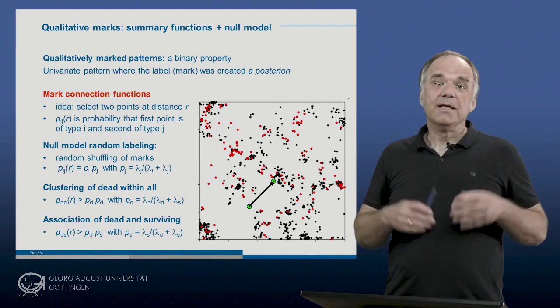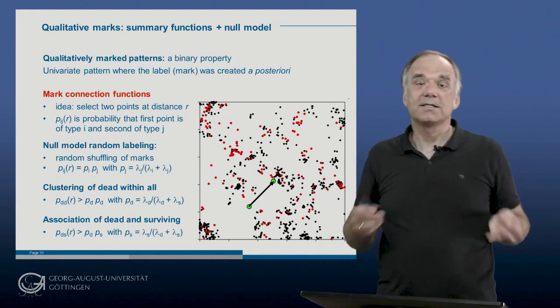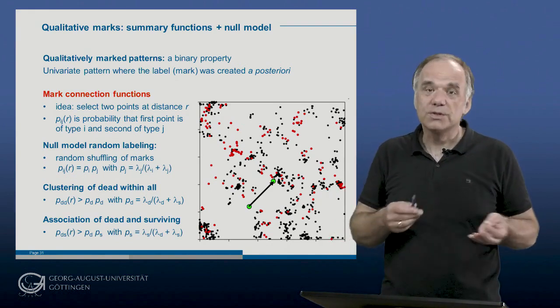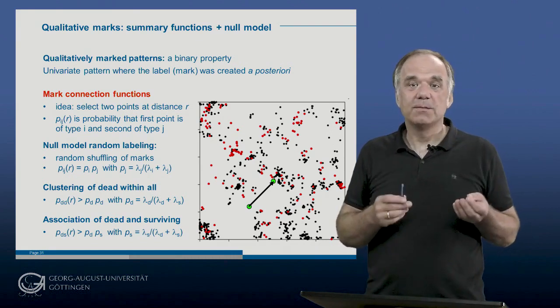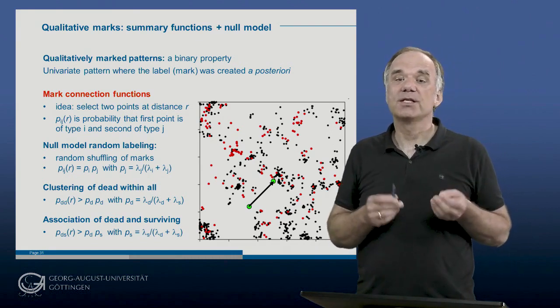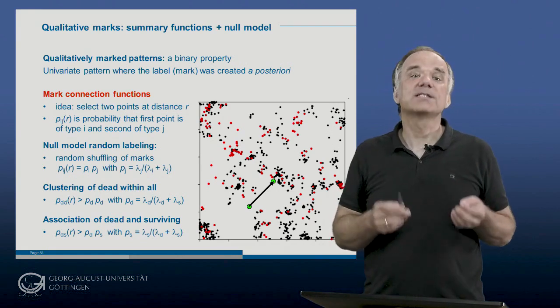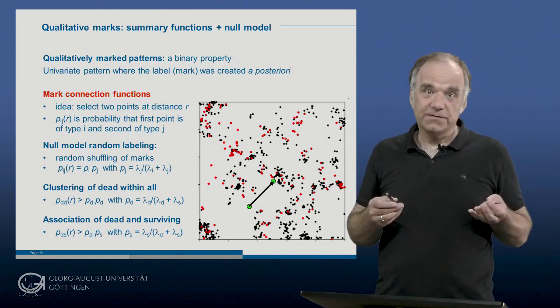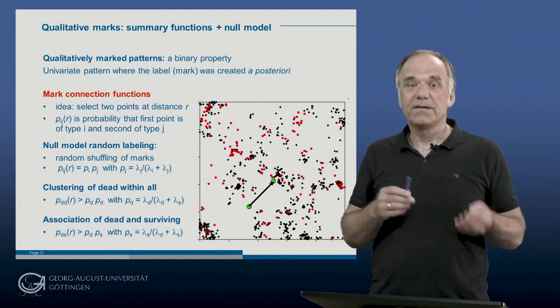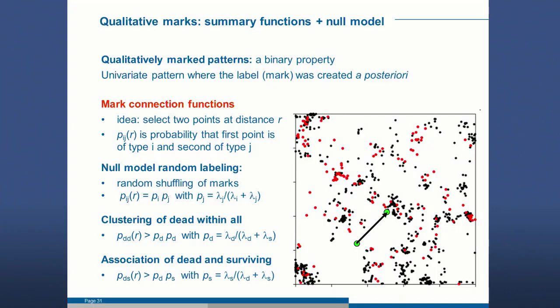However, we may also have a positive association of dead and surviving trees, meaning a dead tree is always close to a surviving tree. The expectation of random labeling for this situation is PD times PS, where PS is the proportion of surviving trees. We have a positive association of dead and surviving trees if the mark connection function is larger than PD times PS.